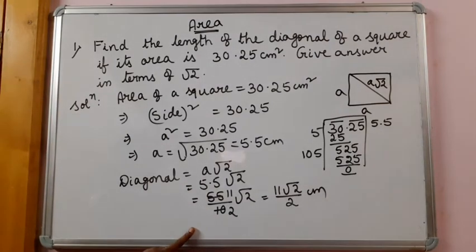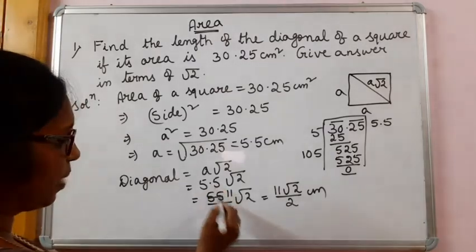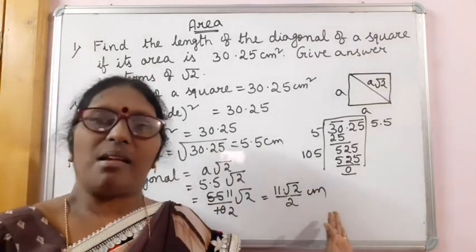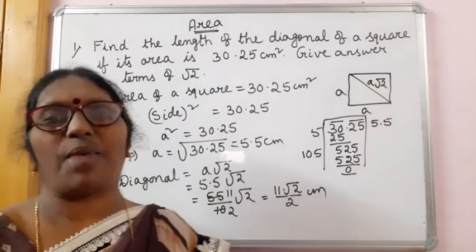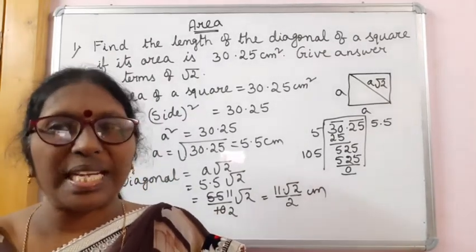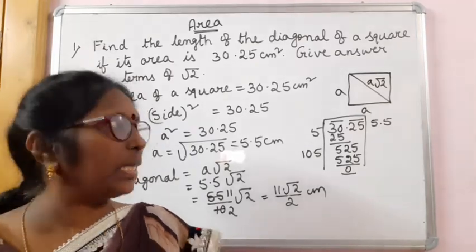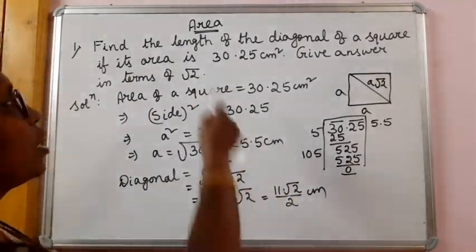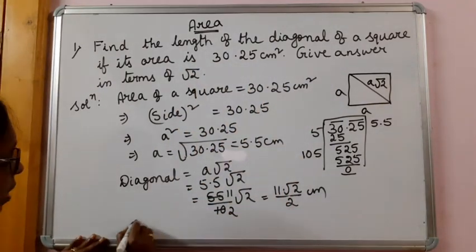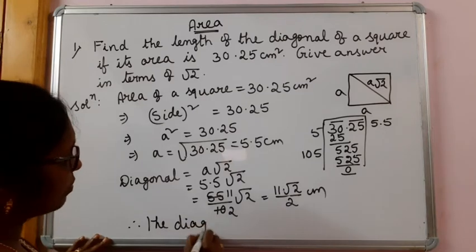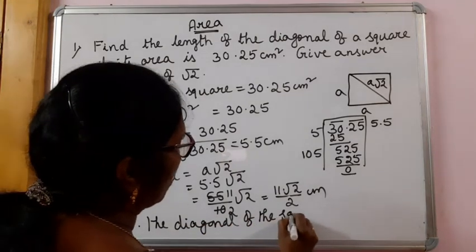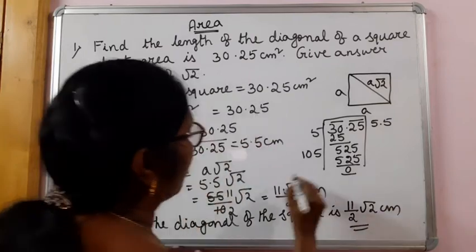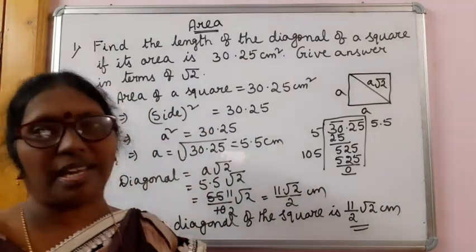I have converted it in the form of a fraction — 55 by 10, after simplification there is a decimal. The question says give answer in terms of root 2, so we can keep the answer like this. Otherwise we would always have to use the value of root 2 as 1.414, or if it is root 3 we use 1.732. But in this case the question says we can show it in square root form. Therefore, the diagonal of the square is 11 root 2 by 2 cm, or equivalently 11 by 2 root 2 cm.